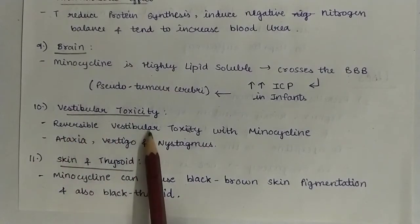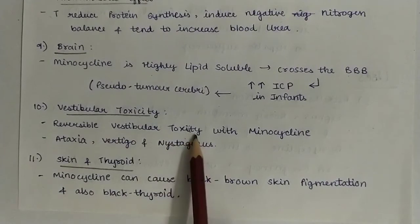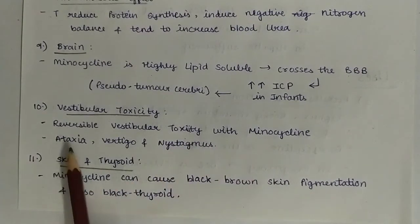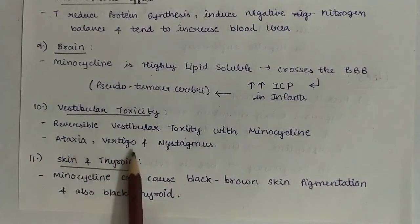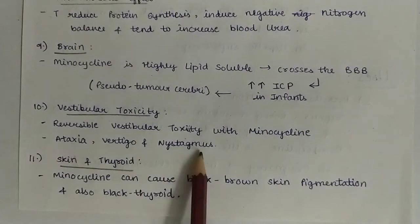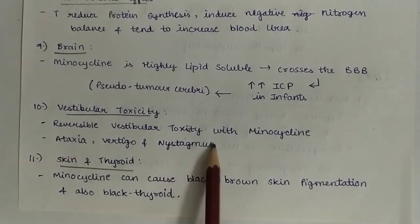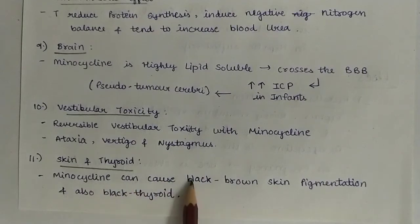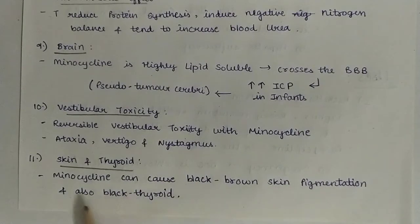Vestibular toxicity: reversible vestibular toxicity with minocycline is seen — ataxia, vertigo, and nystagmus occur. Skin and thyroid: minocycline can cause black-brown skin pigmentation and also black thyroid.